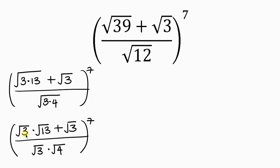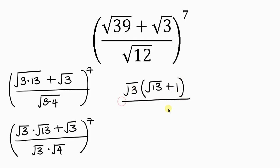Notice that on the numerator, the square root of 3 is common, so we can factor it out. We get the square root of 3 times the bracket: the square root of 13 plus 1. On the denominator, the square root of 3 times the square root of 4 is 2. This is raised to the 7.